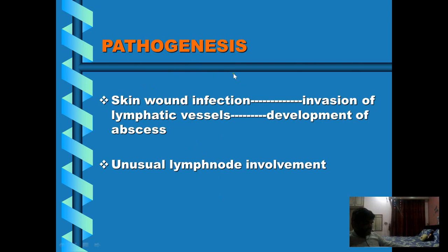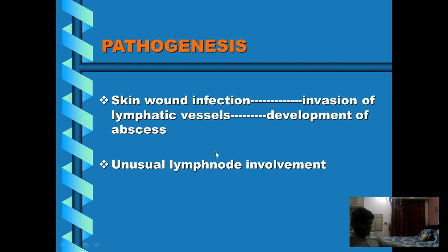Infection of a skin wound is followed by invasion of lymphatic vessels, and then there is development of abscesses along the course of these lymphatic vessels. Generalized lymph node involvement is unusual and rarely happens in horses, but in cattle, generalized lymph nodes may also be involved.